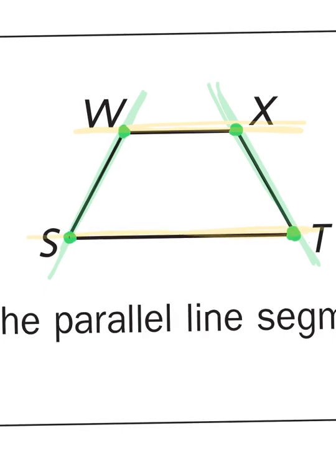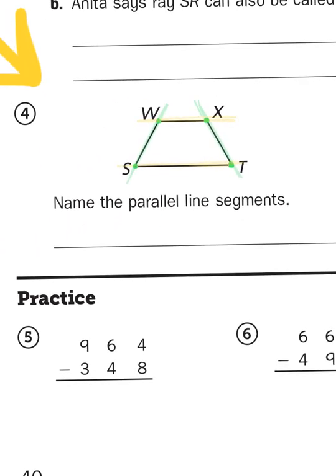So the question posed to you is, name the parallel line segments. Now, it would be helpful to know what the word parallel means. Well, parallel means that if lines were to go on through infinity, if lines are parallel, they would never cross or intersect. Parallel lines would never intersect. Now, lines that are not parallel would at some point intersect.